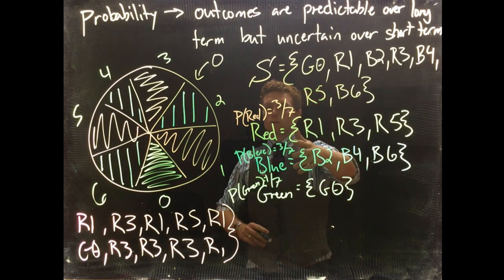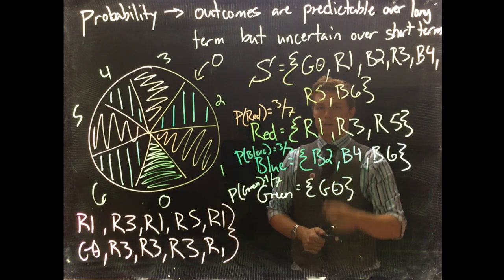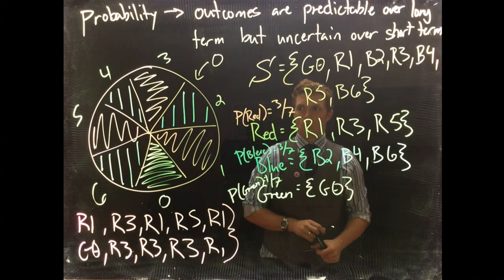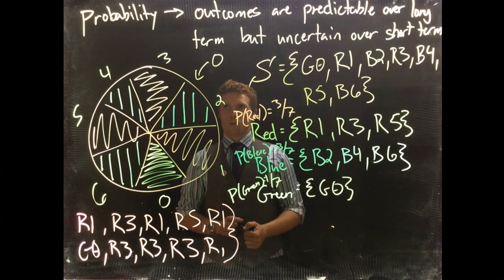Picking red or blue are equally likely to happen. Green is the least likely thing to happen. The best advice would probably be to go home so you don't lose any more money.